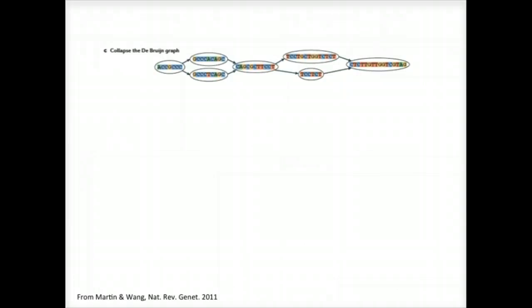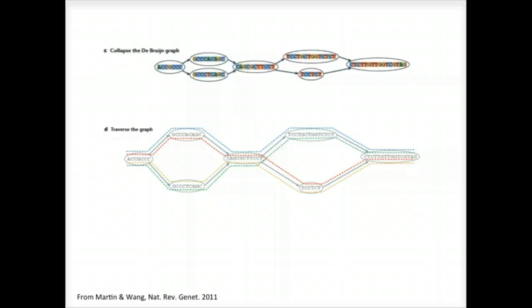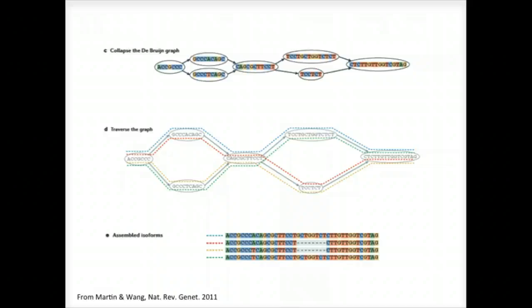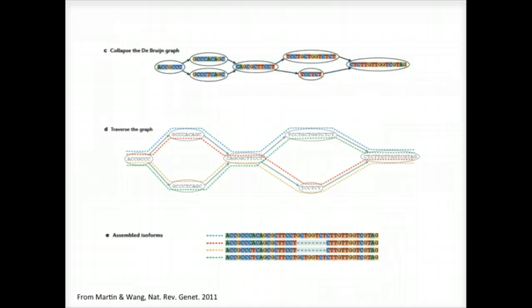To reconstruct transcripts, paths are traversed across the graph. In this example, there are four possible paths from the beginning to the end of the graph, each path shown traced by a different color. By traversing each path, a different transcript sequence is generated. Each of the four differently colored paths generates a different sequence as shown. By taking into account the paths that the reads trace through the graph, along with any mate pairing information, constraints can be placed such that not all possible path combinations are reported, but instead only those paths that are best supported by the RNA-seq reads.